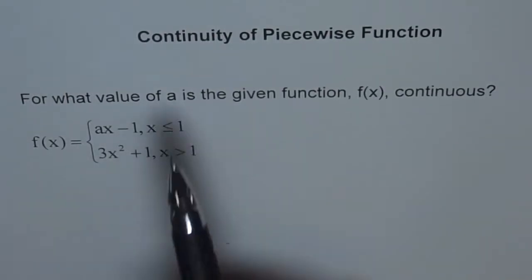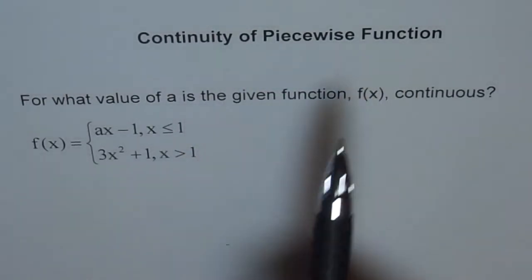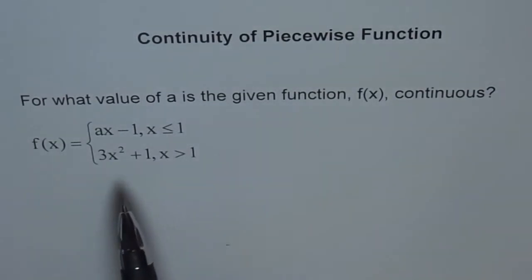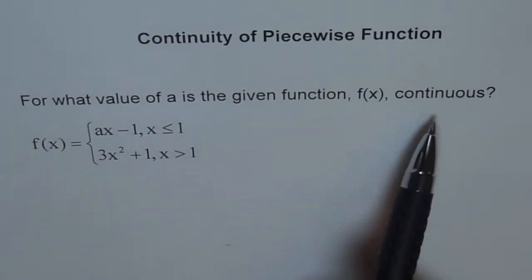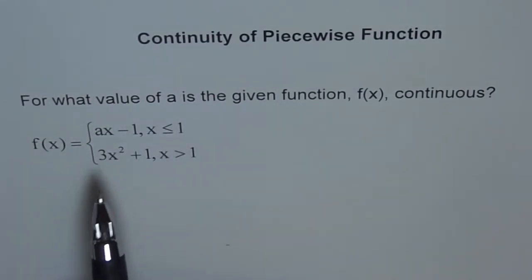Let's discuss continuity of a piecewise function. Here is a problem: for what value of a is the given function f(x) continuous? What we see here is that this function has got two pieces.